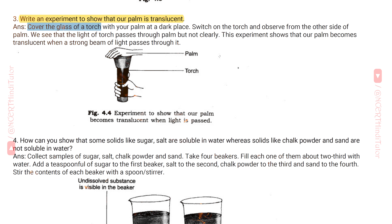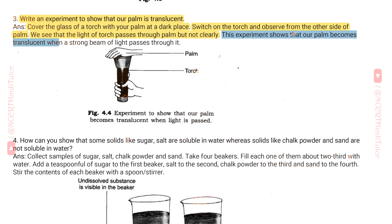Answer: Cover the glass of a torch with your palm in a dark place. Switch on the torch and observe from the outer side of the palm. We see that the light of the torch passes through the palm but not clearly. This experiment shows that our palm becomes translucent when a strong beam of light passes through it. As shown in figure 4.4, this is our palm and this is the torch.